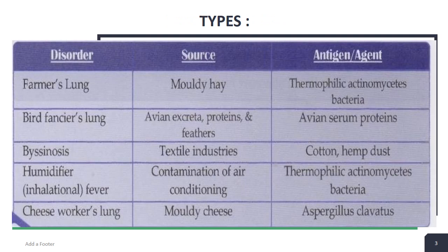These are the types of extrinsic allergic alveolitis or hypersensitivity pneumonitis. First is Farmer's lung, which is caused by moldy hay. The antigen in this disease is thermophilic actinomycetes bacteria, which is present in the moldy hay.